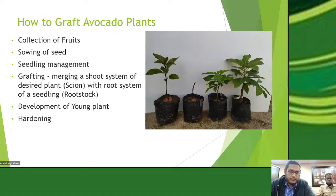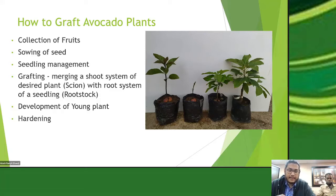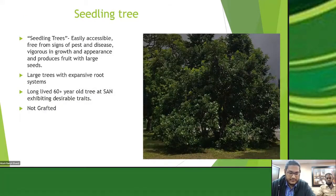When collecting fruits, we prefer to collect from what we call a seedling tree. A seedling tree is one that is easily accessible, shows no signs of pest or disease, looks healthy and actively growing, and produces fruits with large seeds — just like the Lula we showed earlier. That is the ideal seed to use as rootstock, because the large seed will have a greater amount of stored nutrients to produce a young plant.